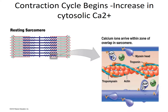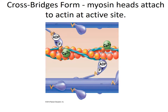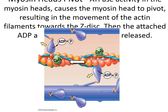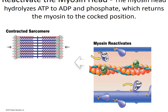The contraction cycle begins when there is an increase in cytoplasmic calcium. The active sites are exposed as calcium interacts with troponin, causing a conformational change in tropomyosin. Crossbridge formation occurs as the myosin head attaches to actin at the active site, causing the myosin head to pivot and resulting in the movement of the actin filaments towards the Z-disc of the sarcomere. The crossbridge then detaches as a new molecule of ATP attaches to the myosin head, and the myosin head hydrolyzes ATP to ADP and phosphate, returning the myosin to the cocked position.